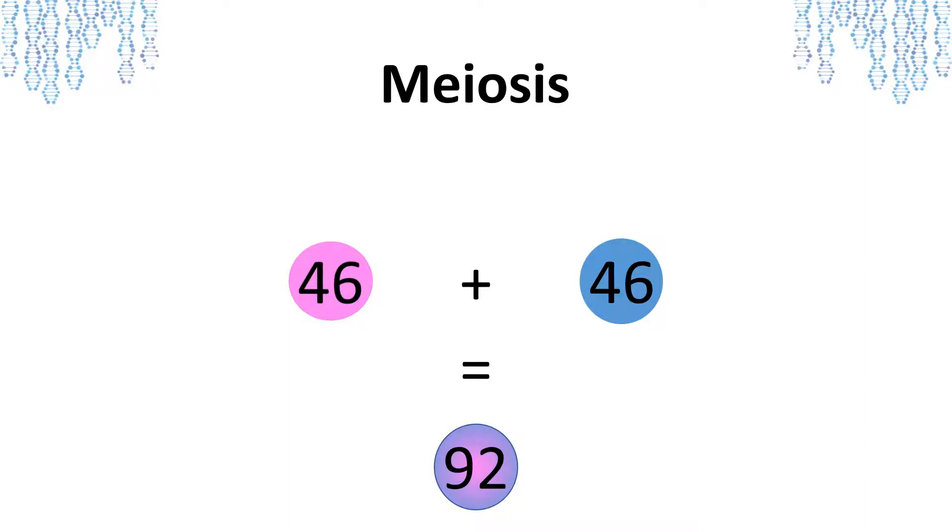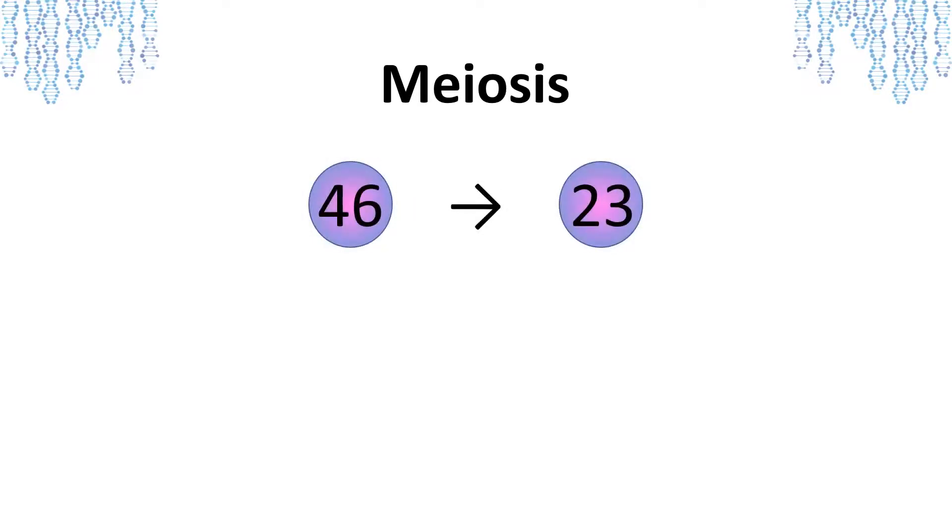This is where meiosis comes in. During meiosis, the number of chromosomes in each parent cell is reduced by half. Our gametes, unlike the other cells in our bodies, undergo meiosis so that they can only have 23 chromosomes.